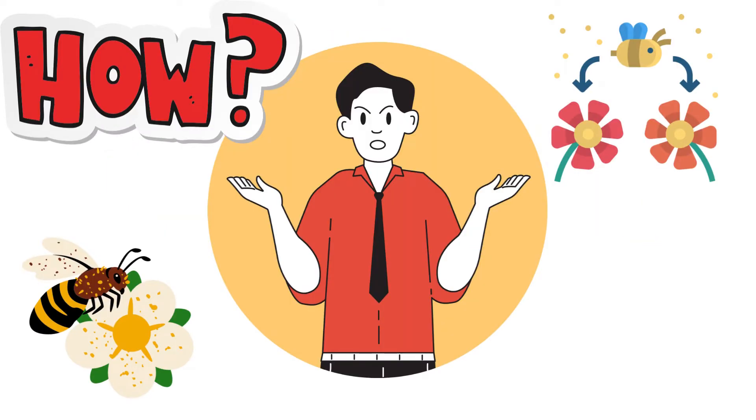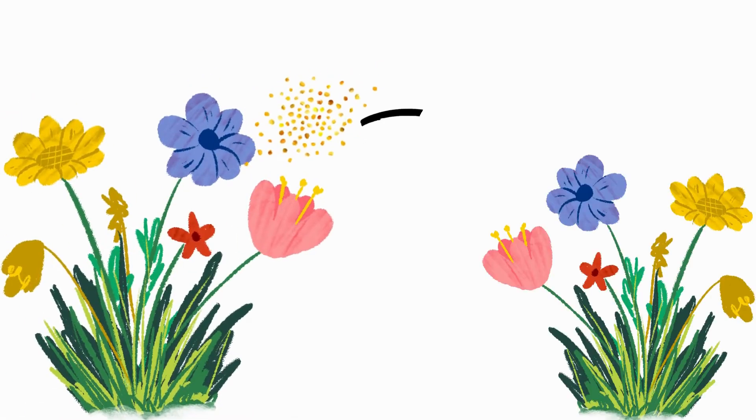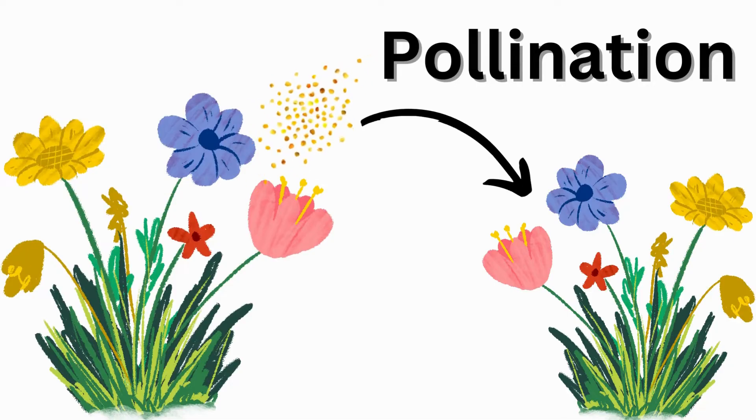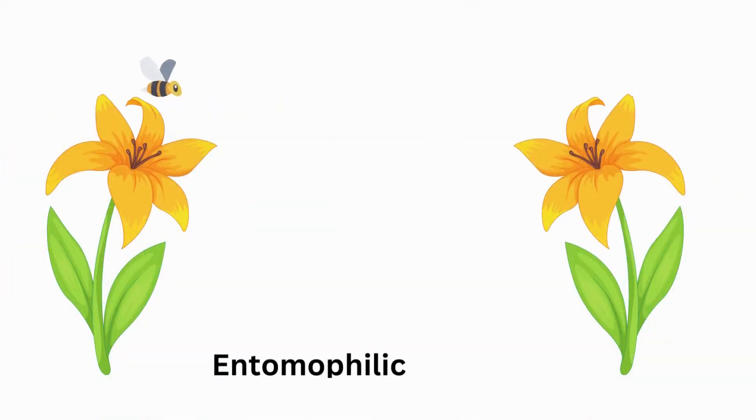So, how does pollination work? Pollination can be best defined as the transfer of pollen from the male anther of a flower to the female stigma to produce new offspring.